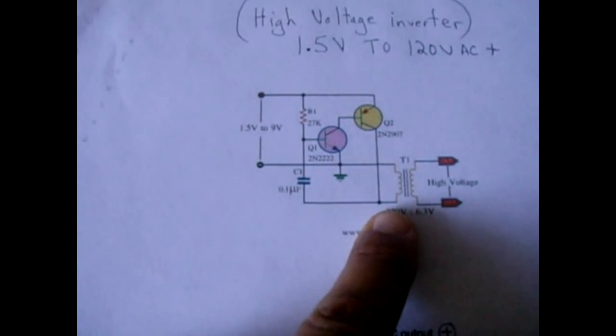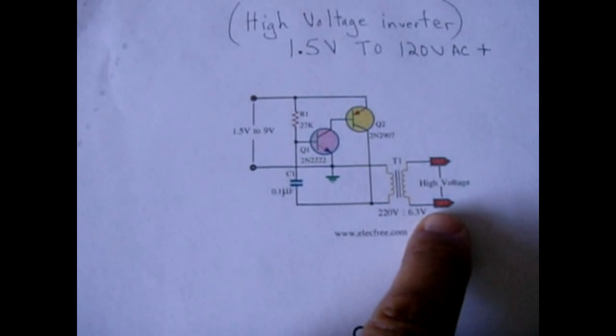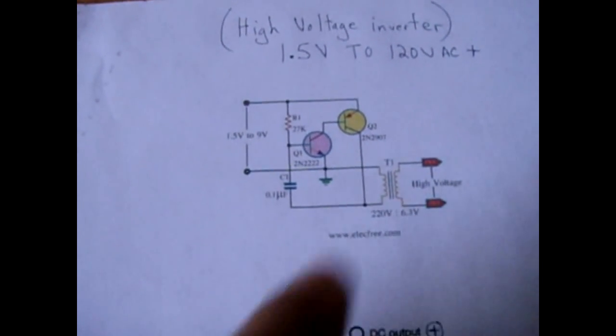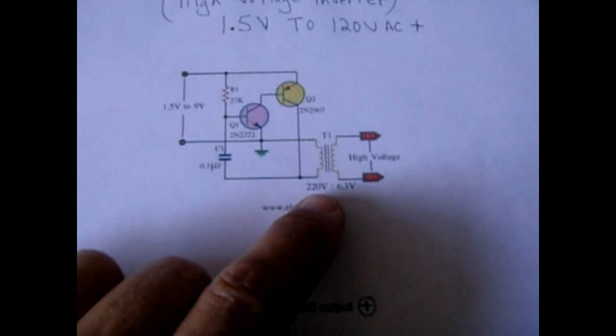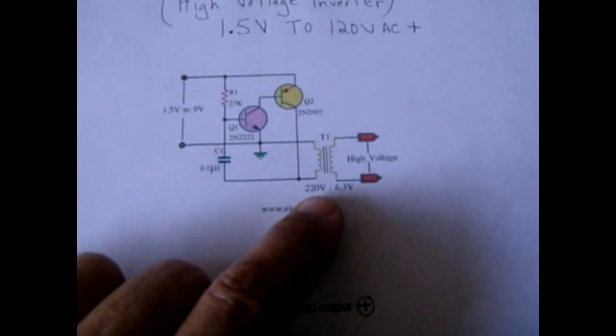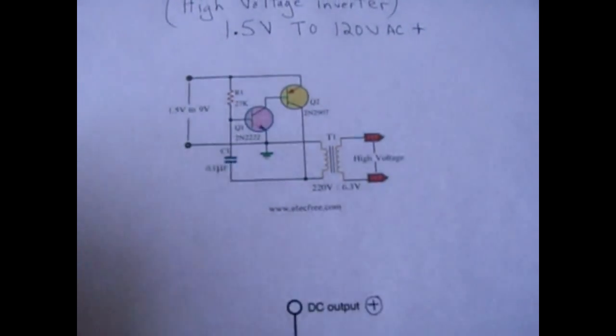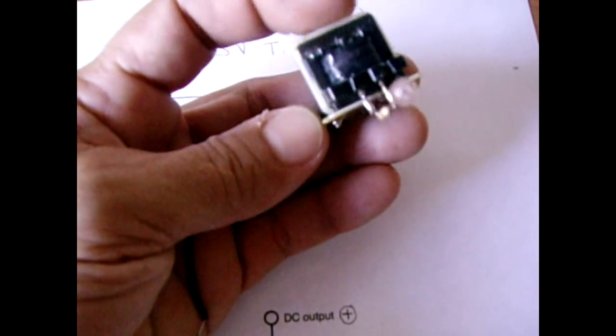So basically what you have is pulsed DC going into the transformer and then you have an alternating current coming out from the pulsed DC. Now the transformer could be just a small little power transformer, the little yellow transformers.